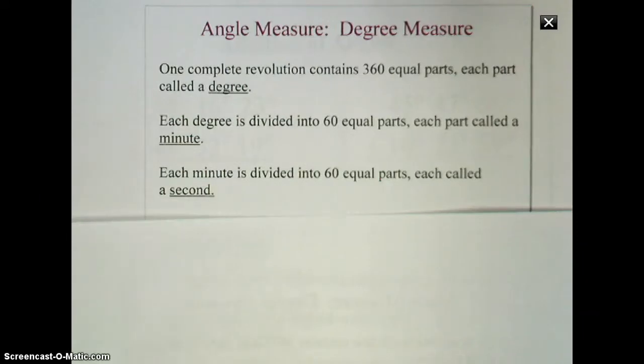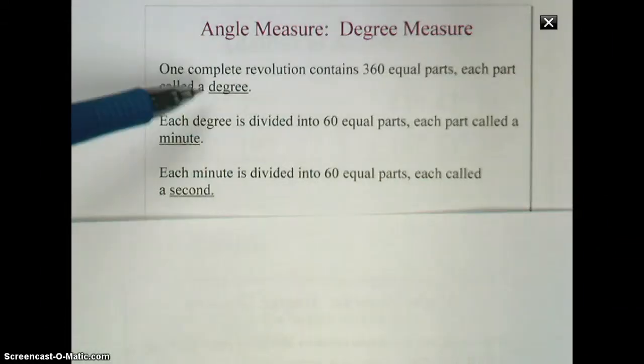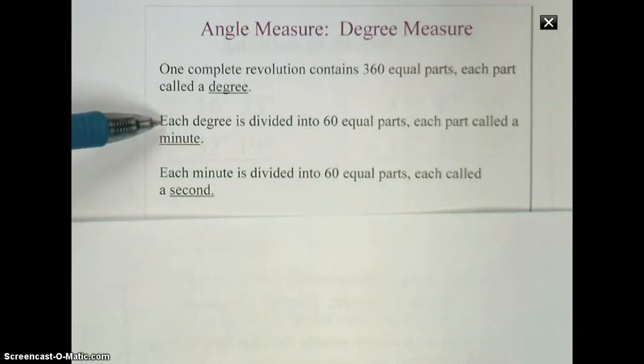One thing I recommend to think about when we're visualizing what this actually means, think about how our clock works. There are 60 minutes into one hour, and within each of those minutes, there's going to be 60 seconds. So think of a degree sort of like an hour, and you can split an hour into 60 minutes, and then each of those minutes you can split up into seconds.